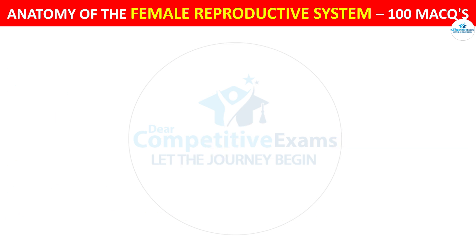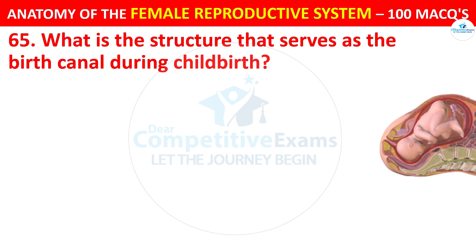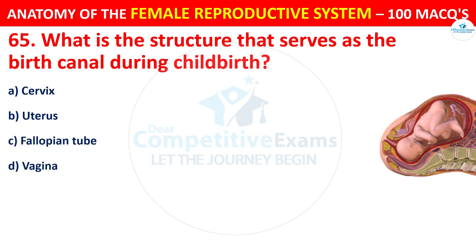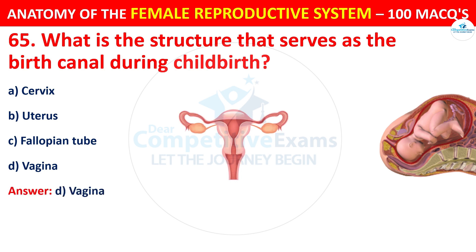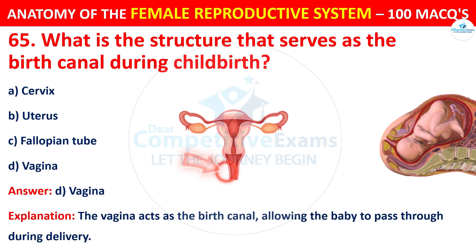Question number 65. What is the structure that serves as the birth canal during childbirth? The correct answer is D — the vagina. The vagina acts as the birth canal, allowing the baby to pass through during delivery.